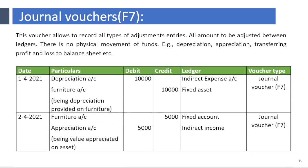Journal Voucher F7. This voucher allows you to record all types of adjustment entries where amounts are adjusted between ledgers with no physical movement of funds — for example, depreciation, appreciation, transferring profit and loss to balance sheet, etc. Tally prompts the user to record the debit amount first. For example: depreciation 10,000 on furniture; appreciation 5,000 on land and building.